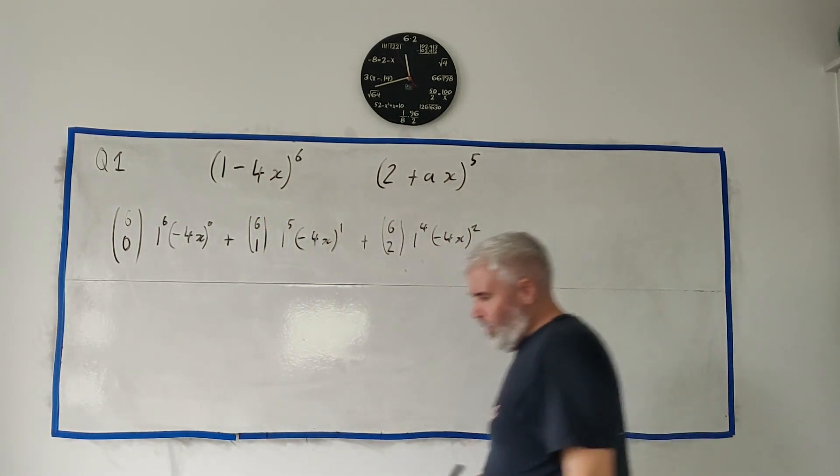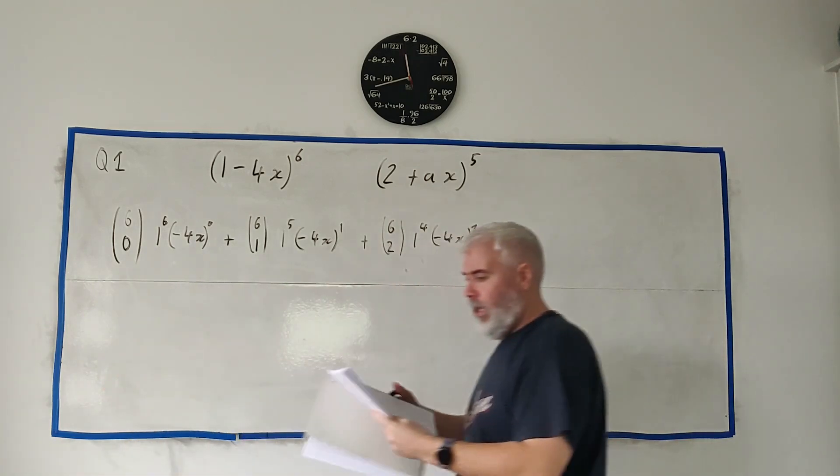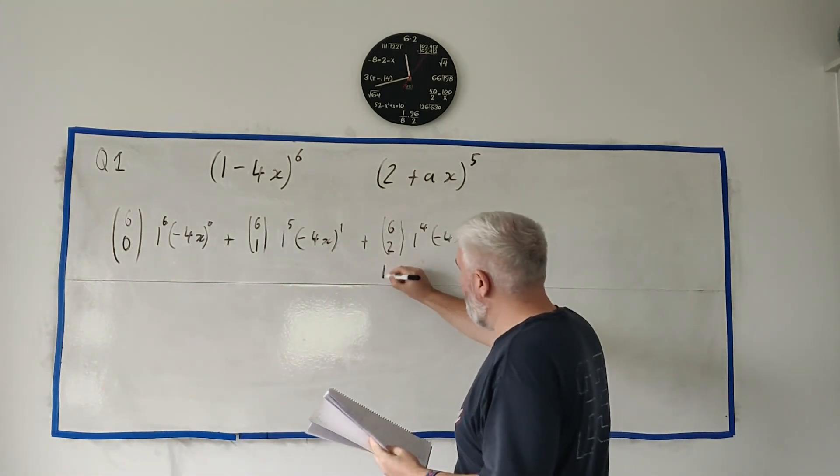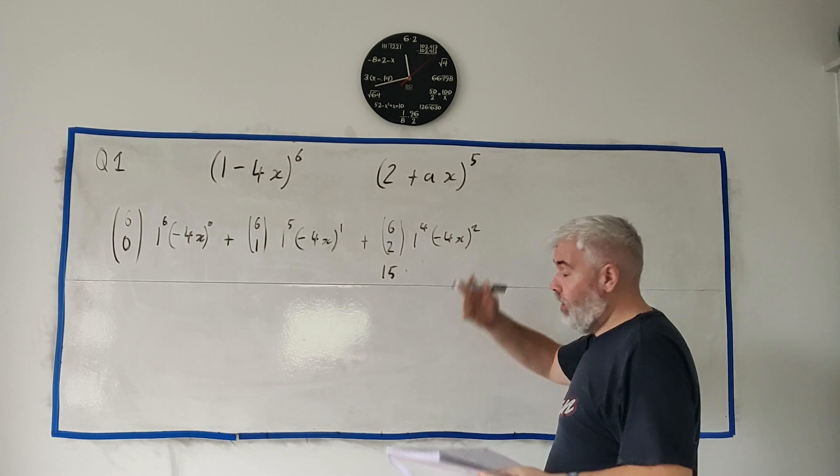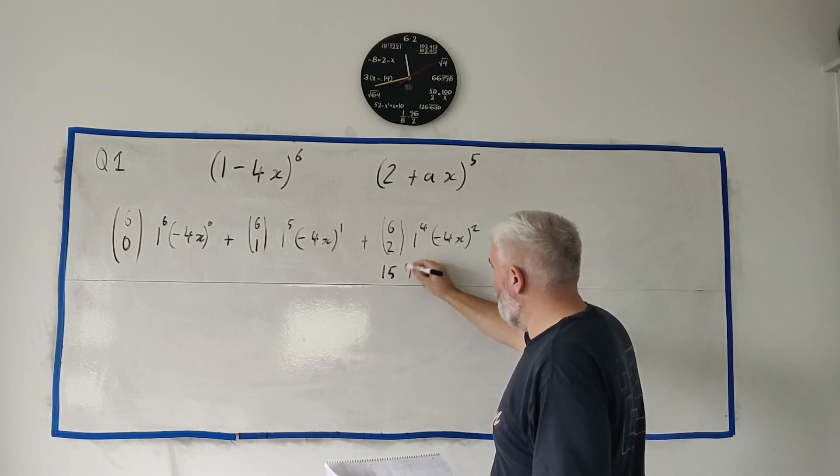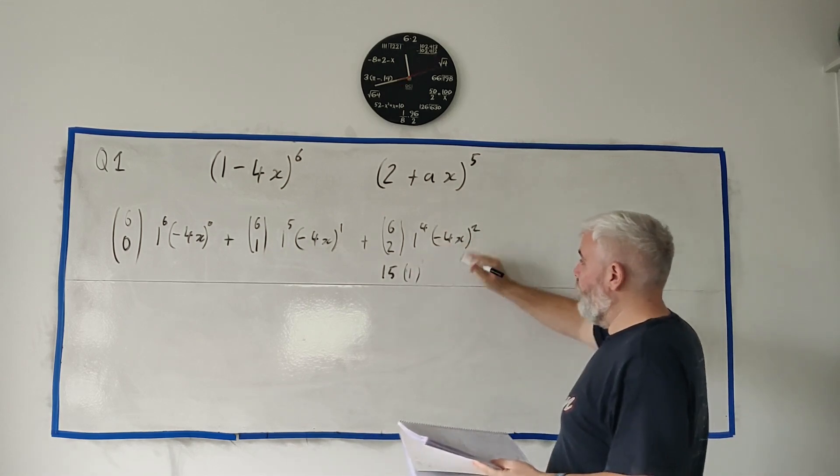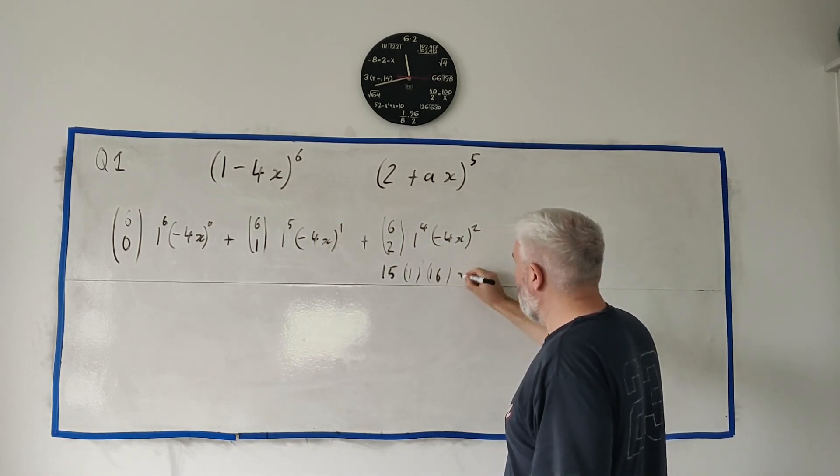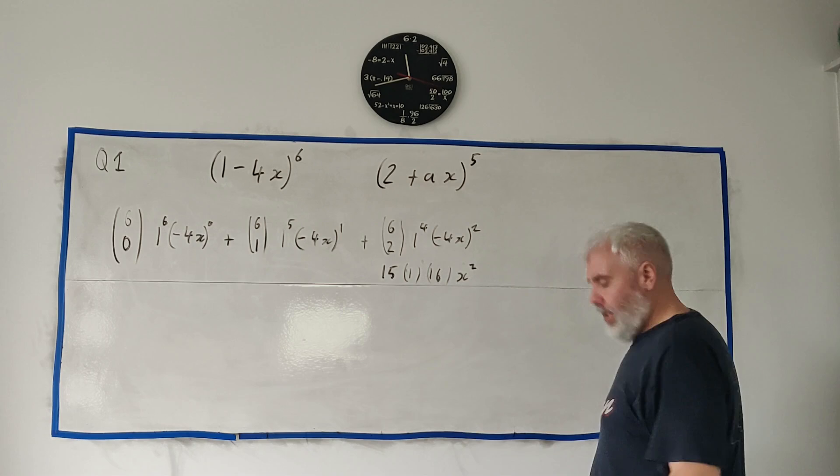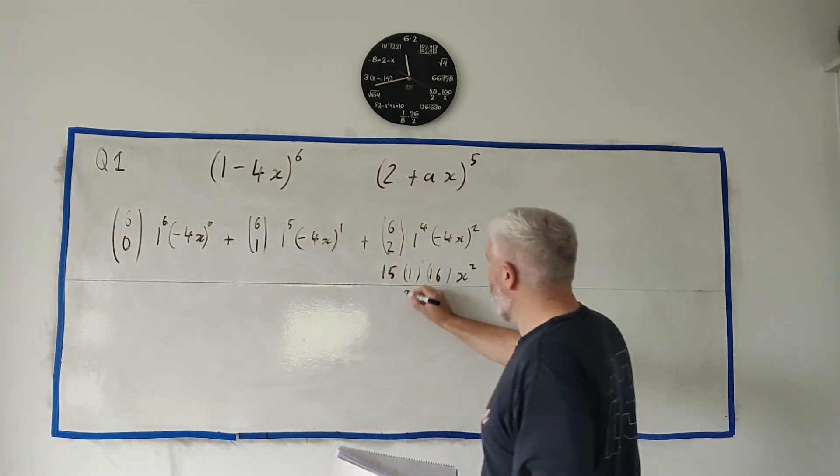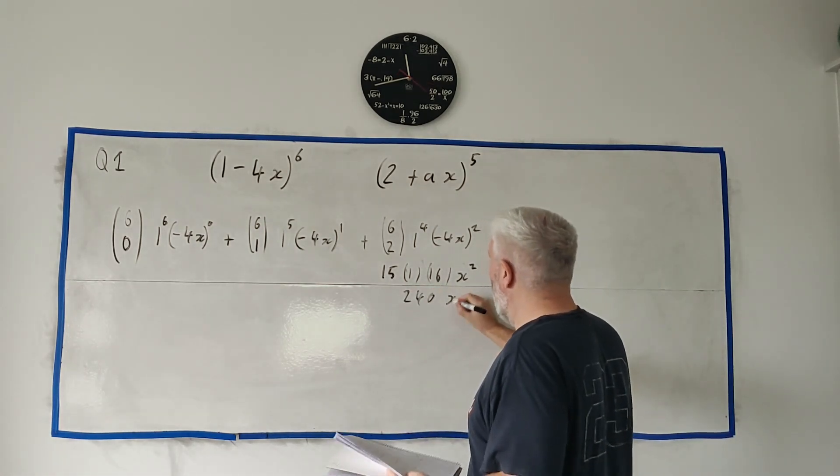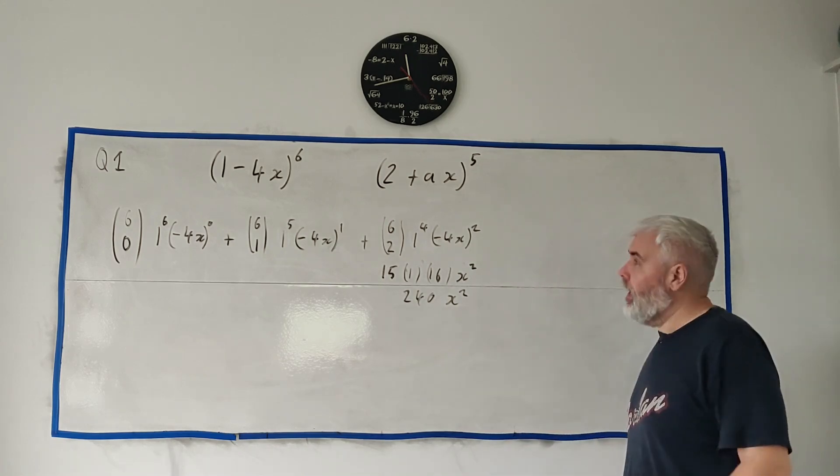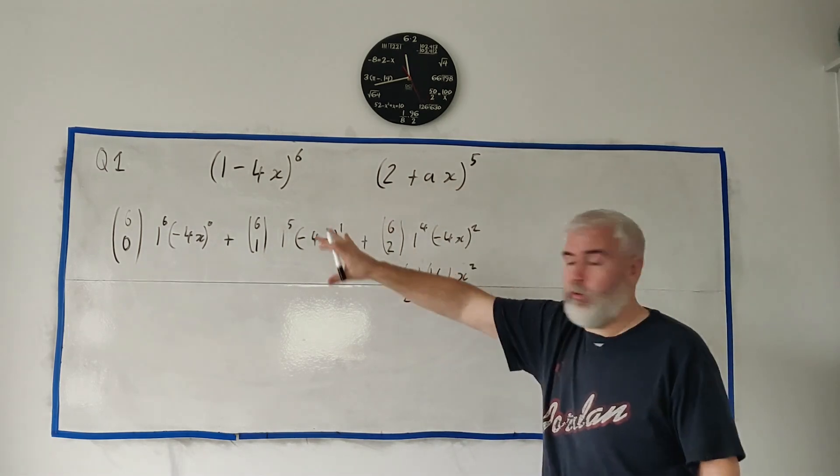And we can clean this up, let me just go to my notes here. 6 choose 2 is 15, 1 to the power of 4 is 1, 4 to the power of 2, or -4 to the power of 2 is +16, and x to the power of 2 is x squared. That all cleans up to 240x squared.